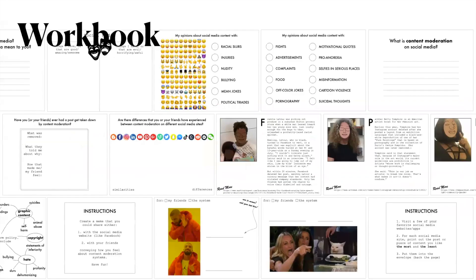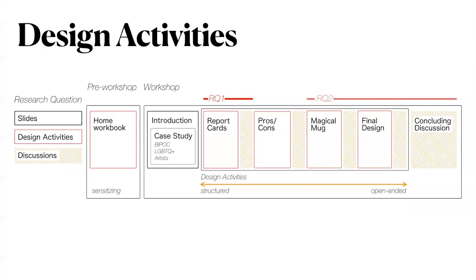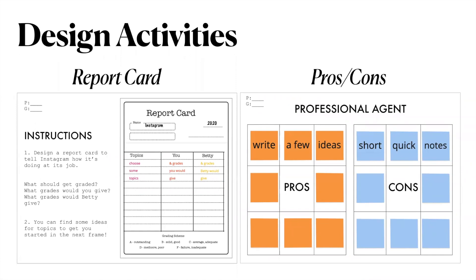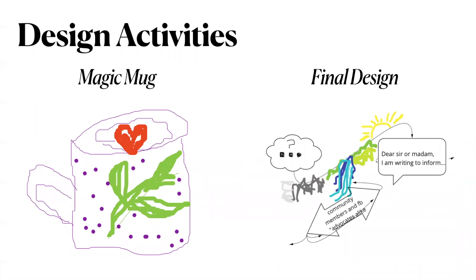Prior to the workshop, participants completed a sensitizing workbook where they were introduced to those case studies. These were also reviewed at the beginning of the workshop before participants engaged in a series of design activities. These activities were designed to be more structured at the beginning and increasingly open-ended as participants gained confidence. Participants first filled out report cards for the platform, identifying values they considered important in content moderation, then considered pros and cons of specific proposals. Towards the end, participants engaged in more open-ended activities, creating a magical mug to help the protagonist from the case study, and then ending with their final design for helping users shape how content moderation is done.